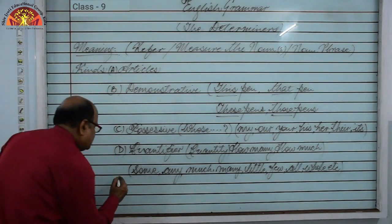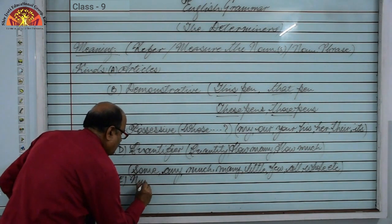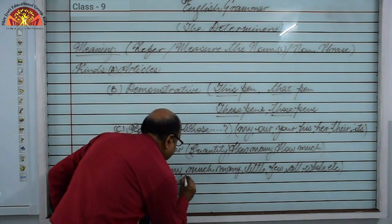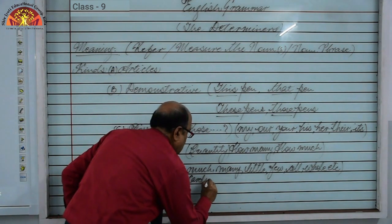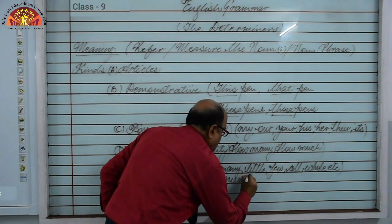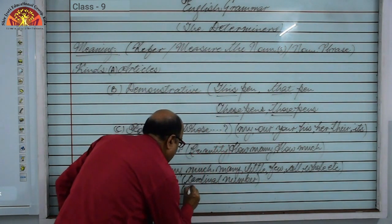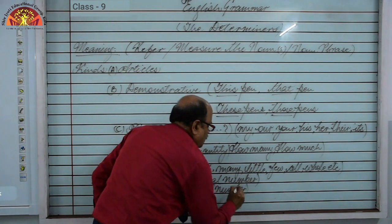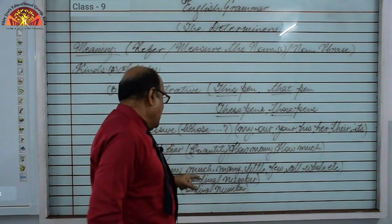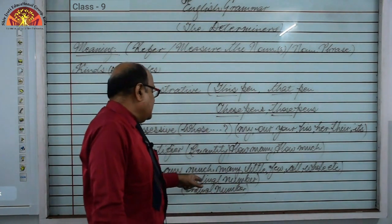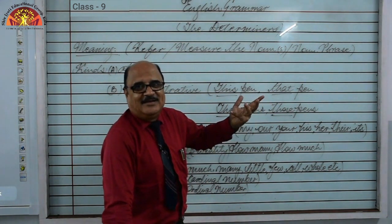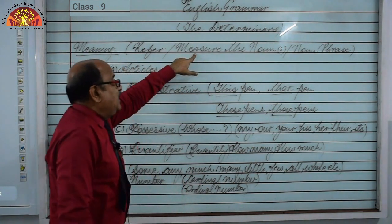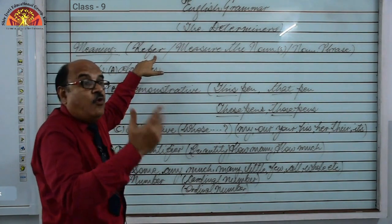The next determiner is number, or numerative. There are two kinds: cardinal numbers and ordinal numbers. Cardinal numbers are used to express quantity — to measure the quantity. Ordinal numbers are used to refer to which one — first, second, third, and so on.